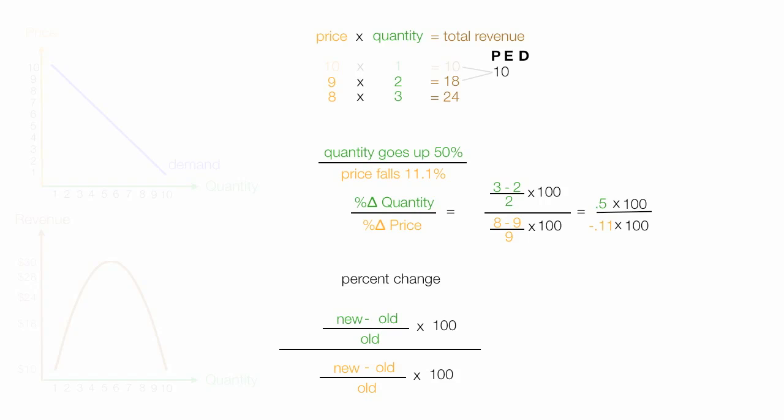So I end up with 0.5 times 100 divided by negative 0.11 times 100. Now in economics we often drop the negative sign, and I'm going to drop it here because I'm only concerned about change. I don't really care about the direction. So this equates to 50% divided by 11%, and this is equal to 4.5. So price elasticity of demand is 4.5. And yes I did round from 11.1% to 11%.